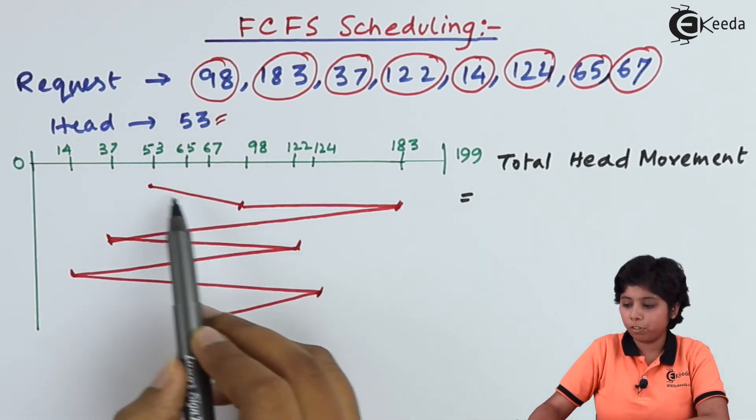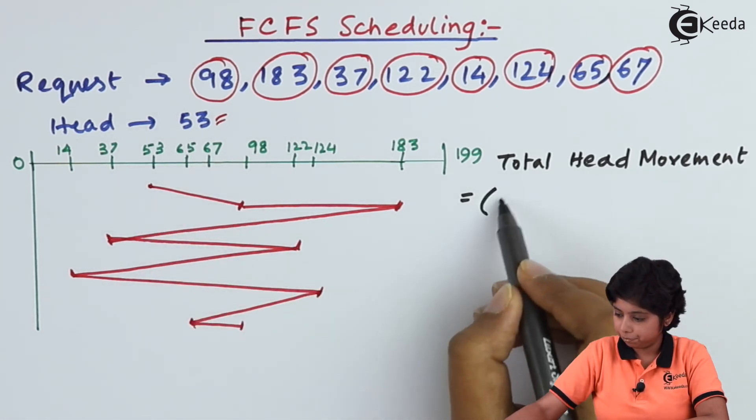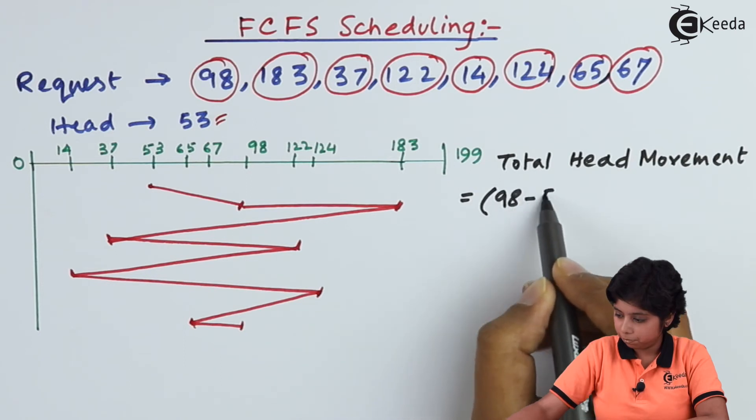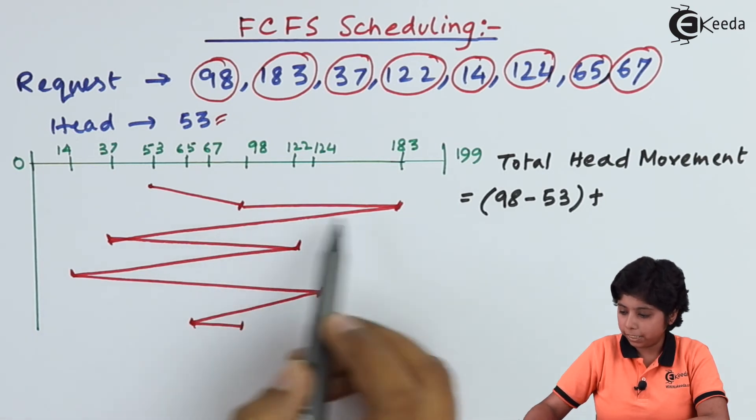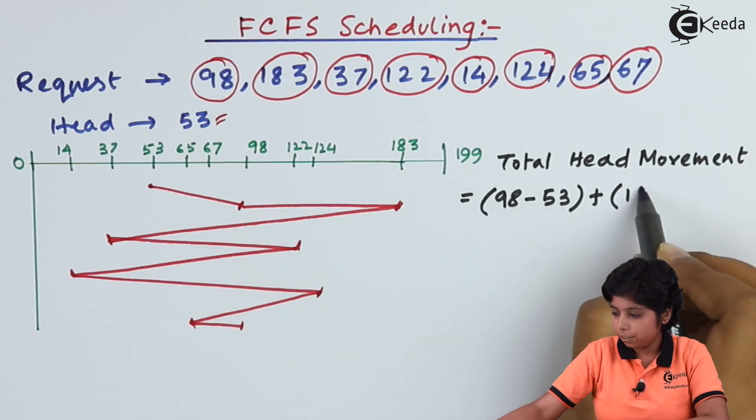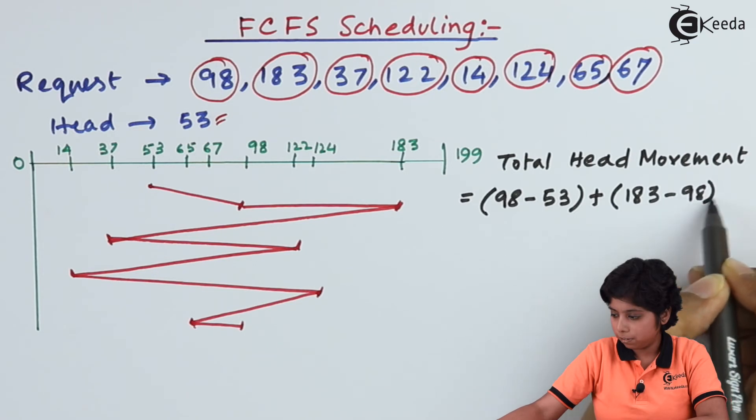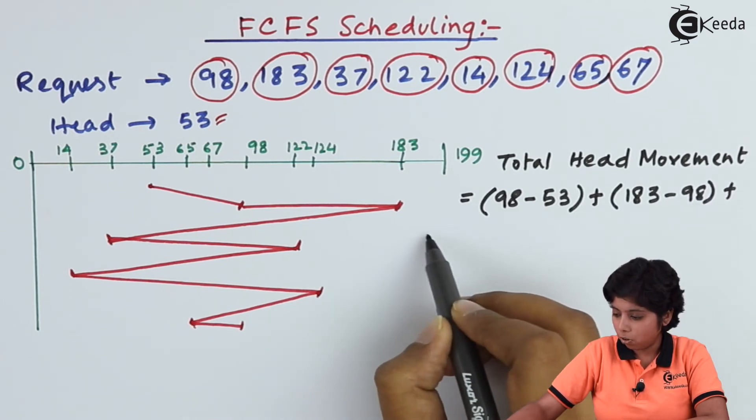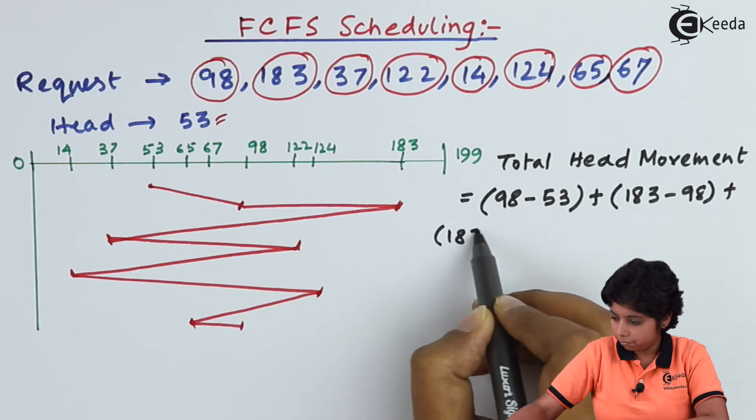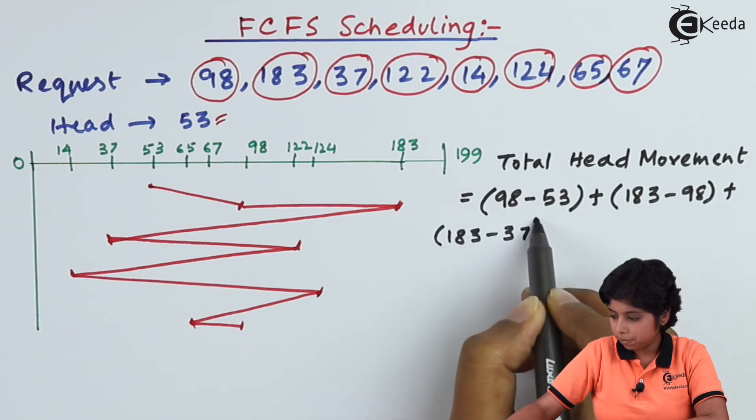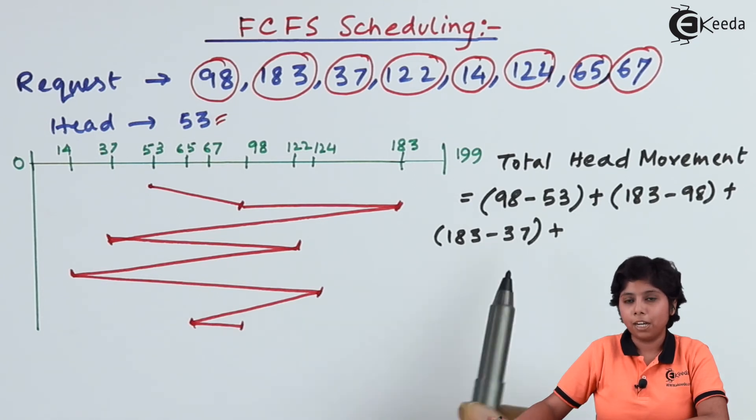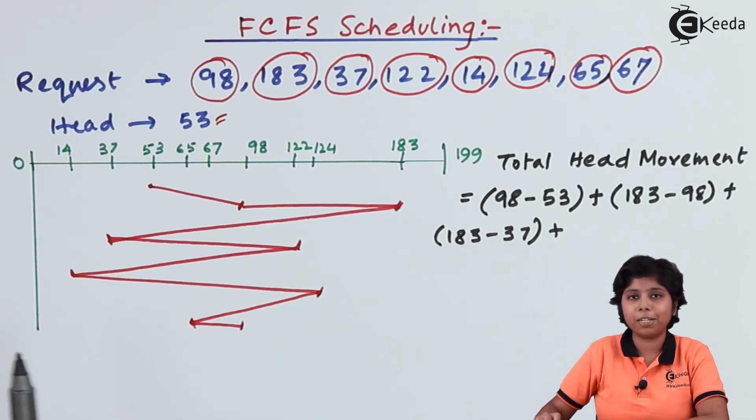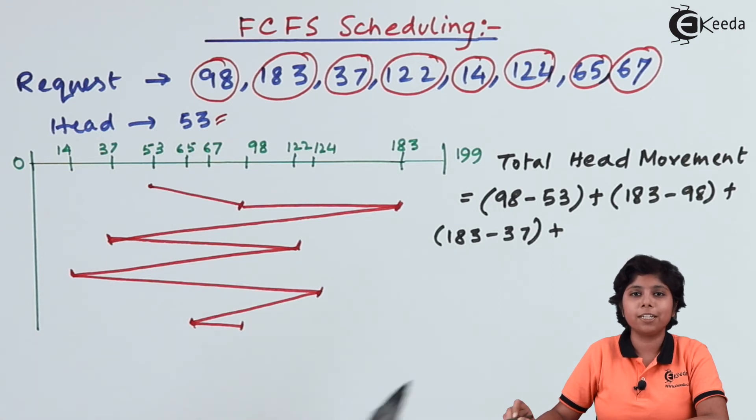First the movement was from 53 to 98. Next it was from 98 to 183. According to this, all will be summed up. Here we are using 183 minus 37, but actually it should be 37 minus 183. We are not considering the negative value, only taking the absolute value.